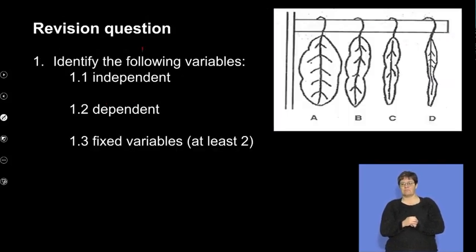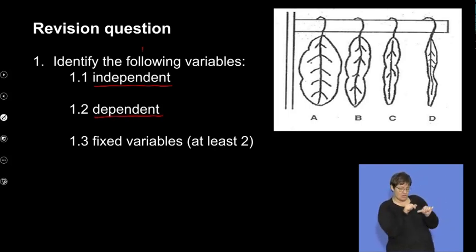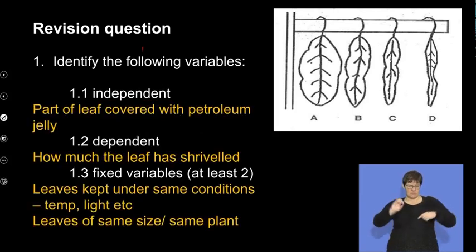Let's have a look at the types of questions that could be asked. First of all, in this experiment, what are your variables? What is your independent variable? And remember, that's the variable that you are changing. What is the dependent variable? And that is what you are measuring. And what are the fixed variables? And in this case, you should be able to find at least two fixed variables.